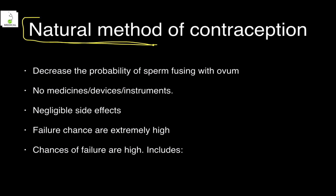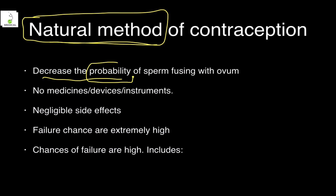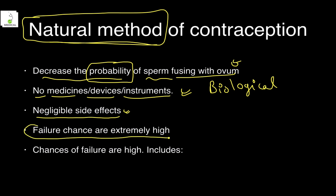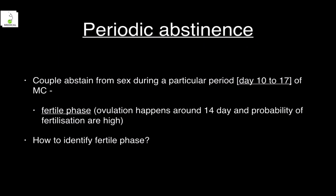Natural methods of contraception do not use any machines or devices whatsoever. They decrease the probability of sperm fusing with ovum by working with biological cycles — no medicines, no devices, nothing. Natural methods have negligible or almost zero side effects, but the failure chances are extremely high — the highest failure rate of any category.